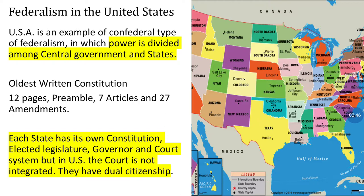When we study about the United States, there is federalism — meaning the power is divided among the state and center. The USA's constitution is written and came into force around 1789. You will be surprised to know that their constitution is only about 12 pages. If we compare the USA constitution with our constitution, there is a vast difference. Their entire constitution has only a preamble and six or seven articles — it is one of the oldest written constitutions.